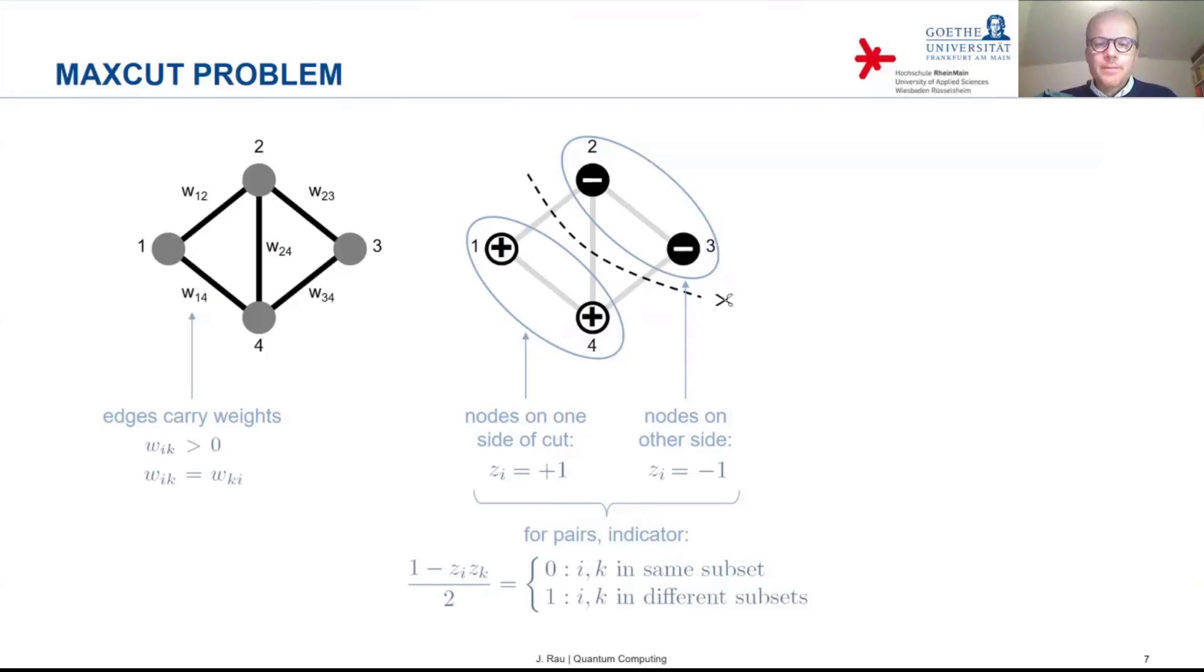So assigning the variables to the nodes in this way also allows us to determine easily which connection between pairs of nodes were cut and which were not cut.